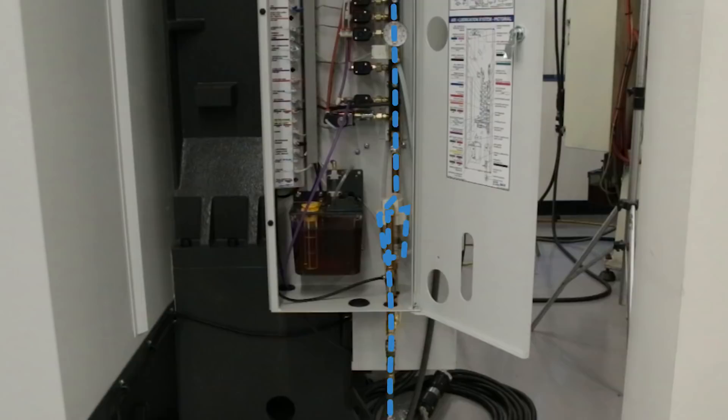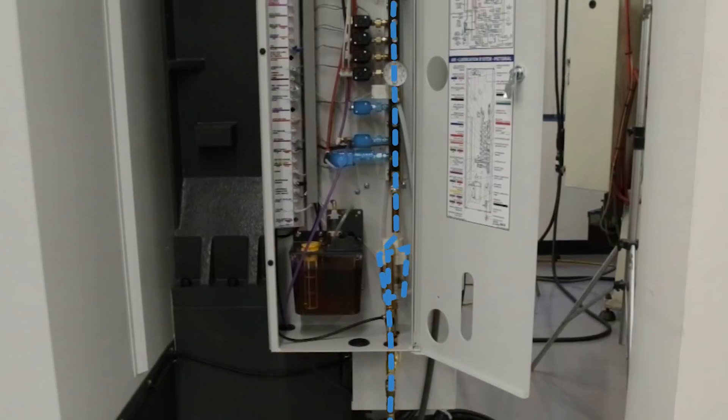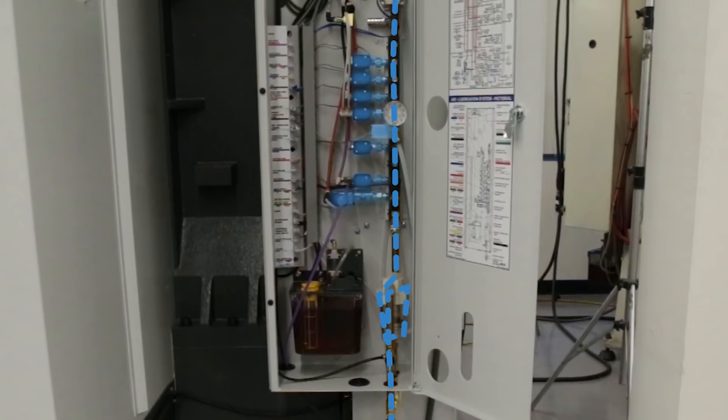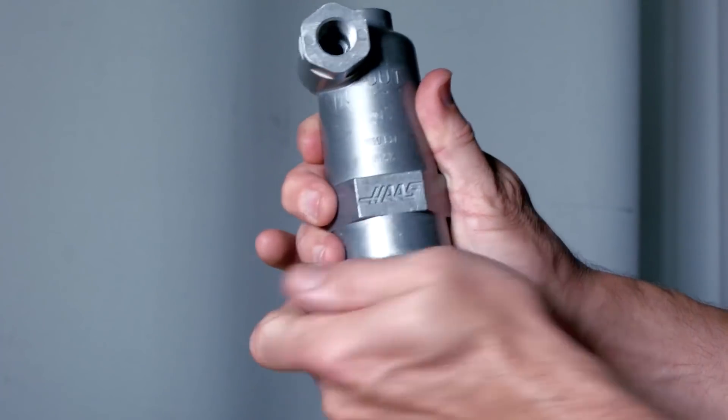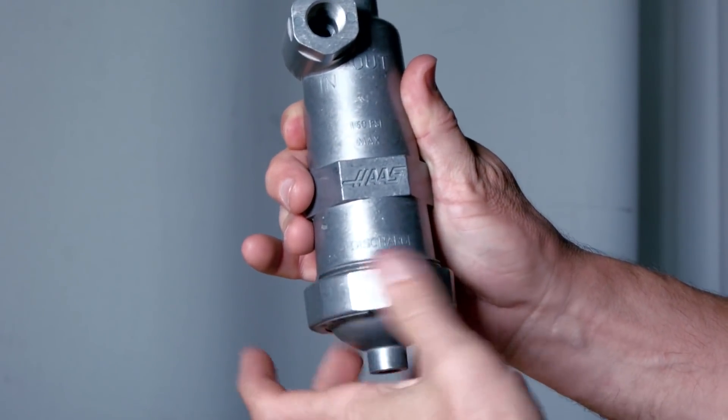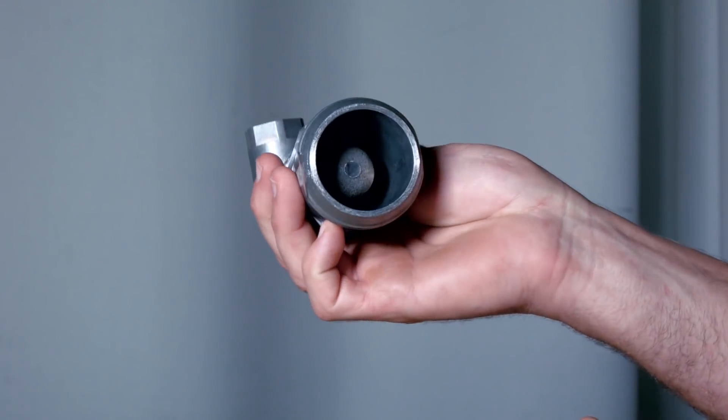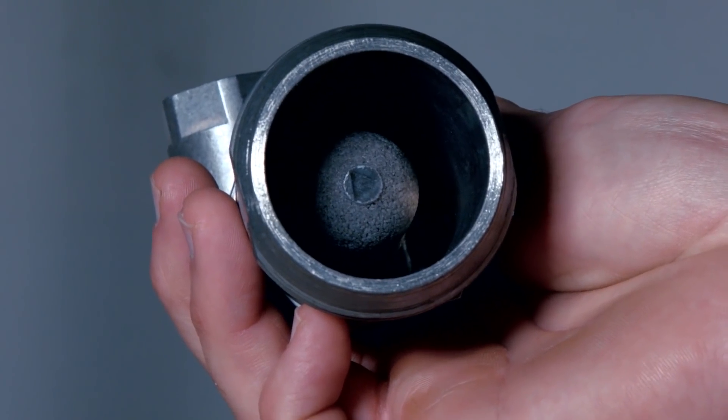As you can see, your incoming air feeds directly into this manifold and right into these solenoids. Be sure and check this filter regularly since this is the last line of defense before air gets into your machine. Not only do you want to clean any debris out for obvious reasons, a clogged filter might also be restricting the airflow to your machine. Whether it's water or debris, poor air is a quick way to have your machine down and needing repairs.